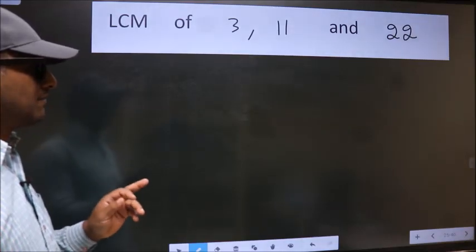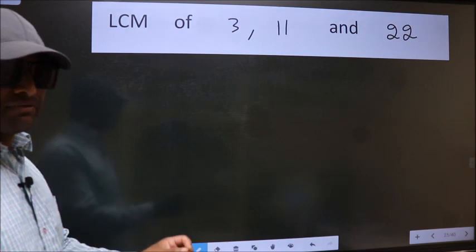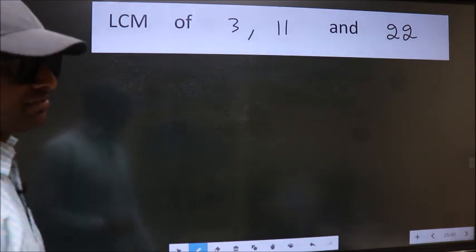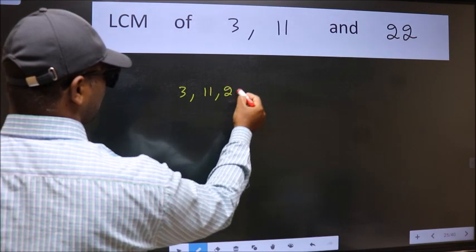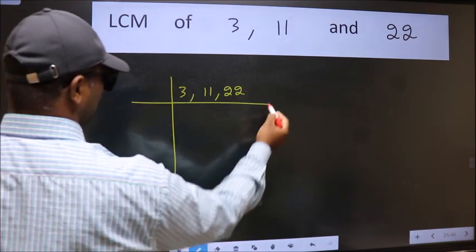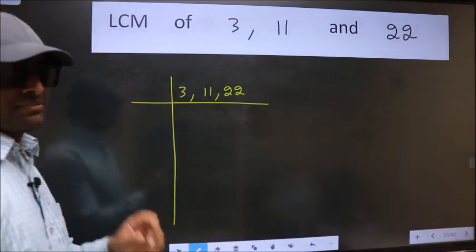LCM of 3, 11 and 22. To find this LCM, we should frame it in this way. 3, 11, 22. This is your step 1.